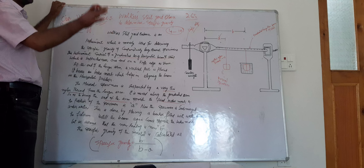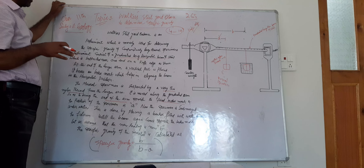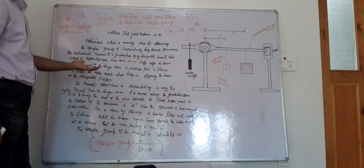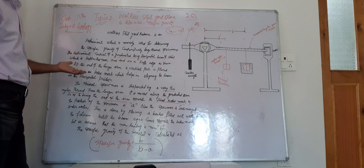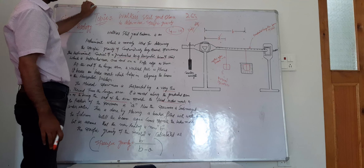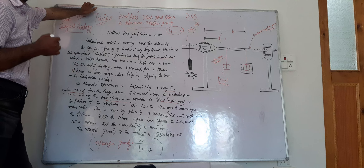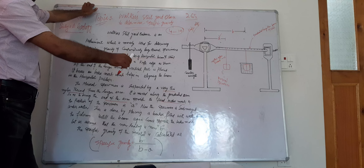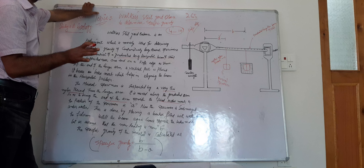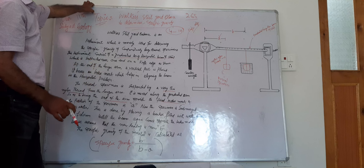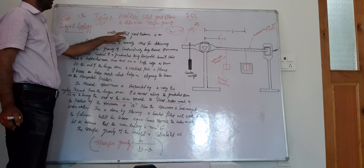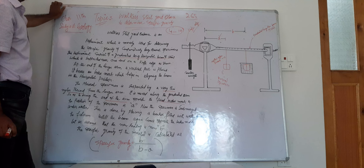When we have Reading B, the specific gravity of a mineral is calculated as B divided by B minus A. This is derived from the weight of the mineral in air and the weight of the mineral in water. With this ratio, we can determine the specific gravity using Walker's Steel Yard Balance, which is useful for a large variety of minerals.